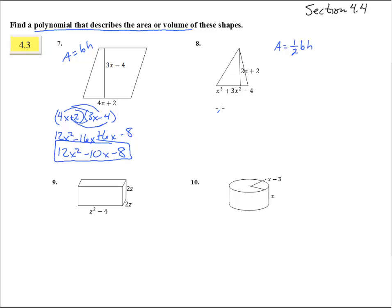So that means we have to take area equals one-half times, here's the height, 2x plus 2 times x cubed plus 3x squared minus 4. That looks big.